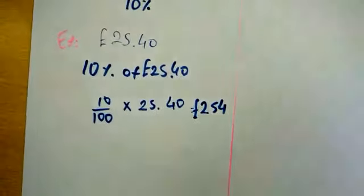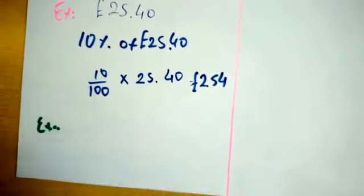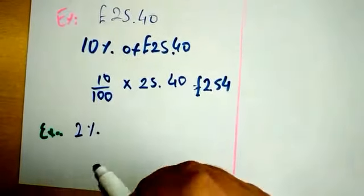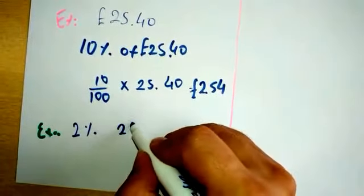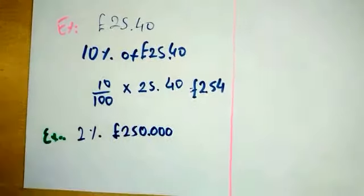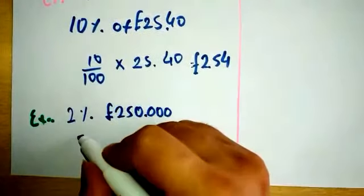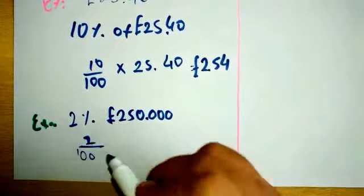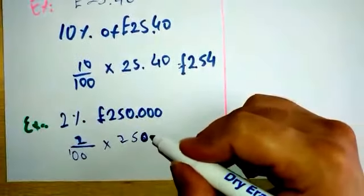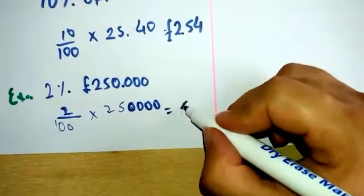Another example: a salesman getting 2% commission of his sales. In one month, he secures £250,000 worth of orders. How much commission does he receive? You will do 2 out of 100 and then multiply it by the number itself, £250,000. When you put these numbers in your calculator, you will get £5,000.